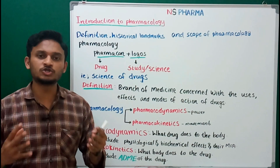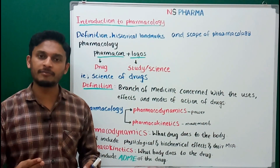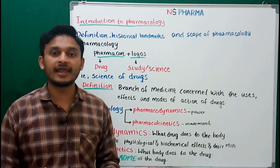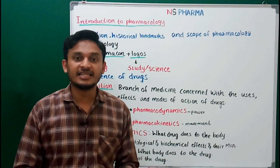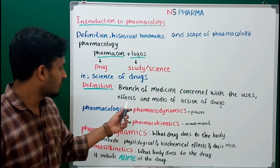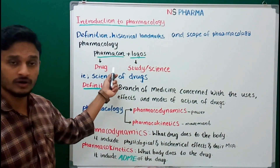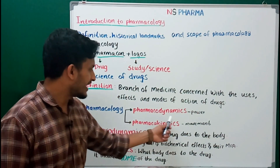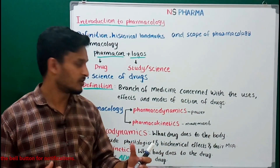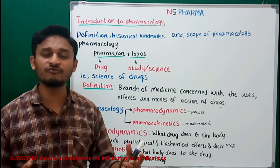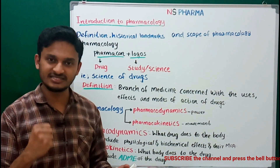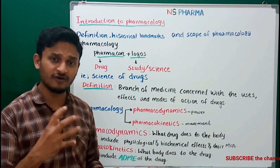Pharmacology has two main divisions: pharmacodynamics and pharmacokinetics. Pharmacodynamics — you can get the meaning from the word itself. Pharmacone means drug, and dynamics means power. So pharmacodynamics means the power of the drug — what is the ability of the drug, what this drug will do in the body.